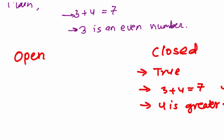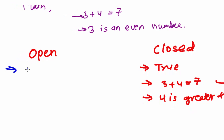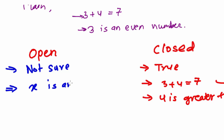Now, what about open sentences? In an open sentence, there is doubt — you're not sure whether the sentence is correct or not. For example, 'x is an even number.' How can I say x is an even number? It can be an even number or it can be an odd number.